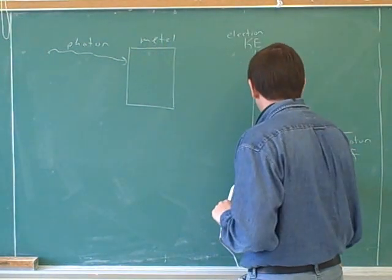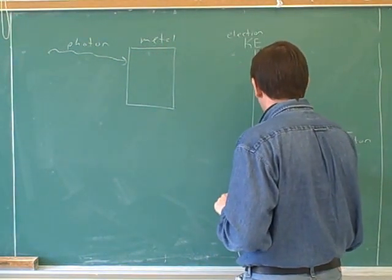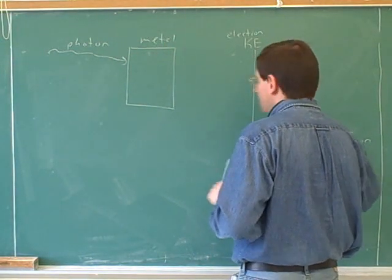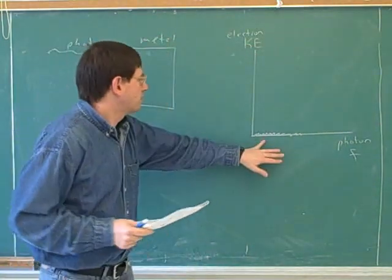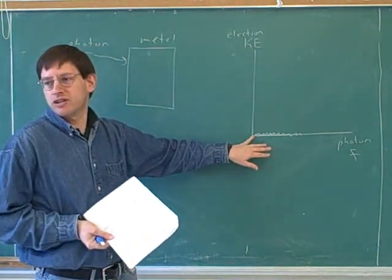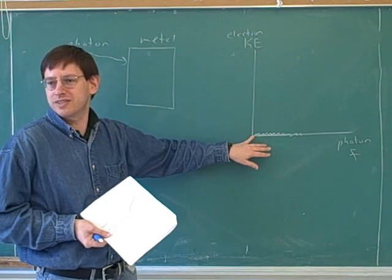So for very low frequencies, the graph looks like this. For very low frequencies, there is no energy of a freed electron, because there's no freed electron in the first place.